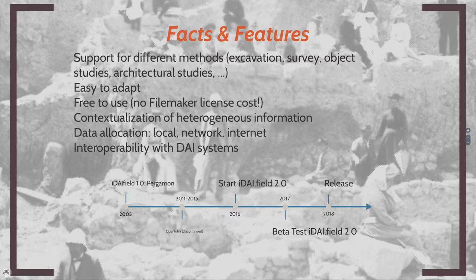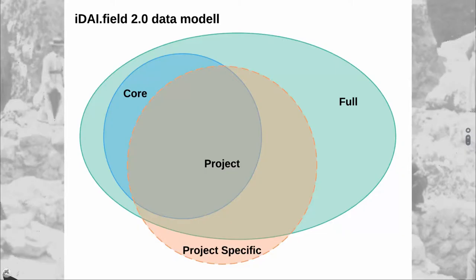Looking at it in an overly simplified way, any archaeological research project is represented through the Venn diagram here. Some attributes will be needed that are common to all projects — for example, measurements, you need measurements for everything. You also need attributes that are just relevant for a specific area of research, such as building versus excavation. And there will be very few in the non-overlapping part that will be relevant for only one project. So we decided that for data consistency, we needed to pre-produce the attributes of the shared areas, while the project-specific ones would be created as needed.